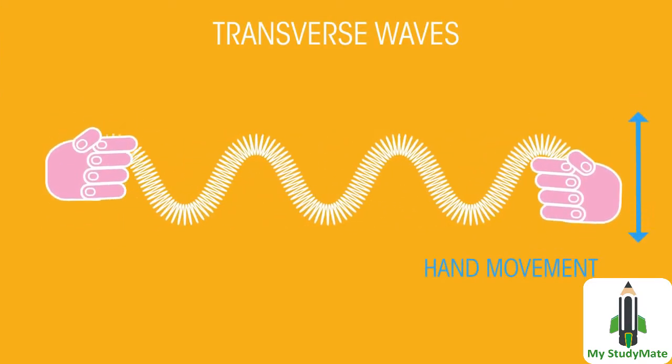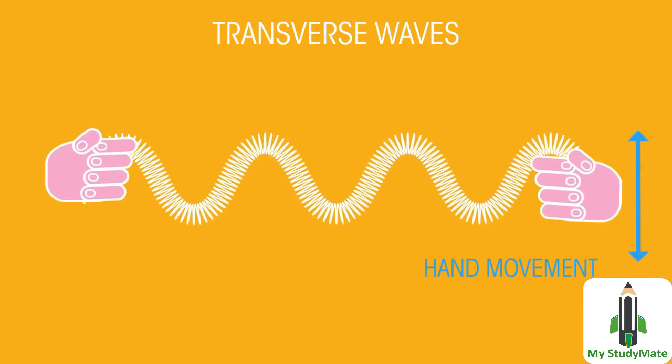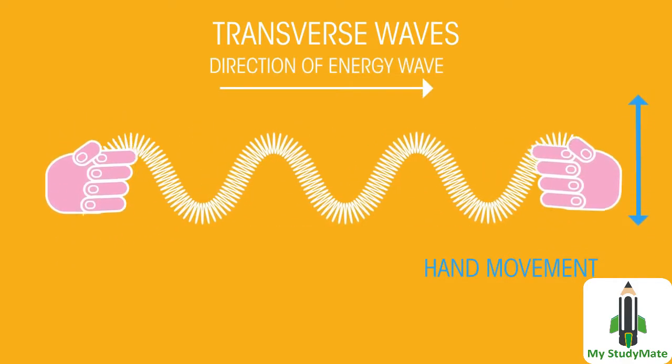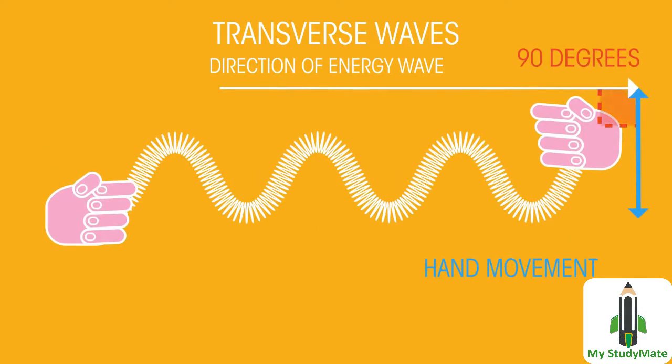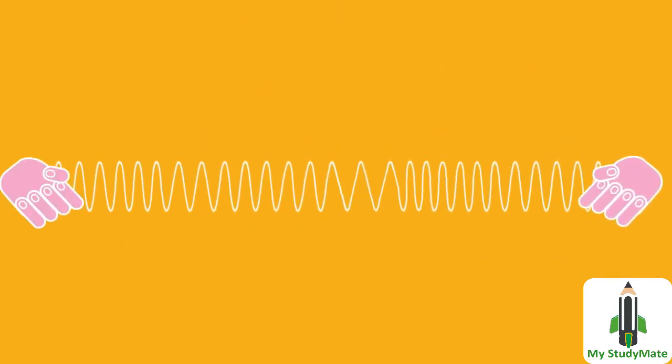Let's look at the other type of wave, transverse wave. The hand moves up and down as does the slinky, but the wave itself moves from left to right. So the particle vibrates at 90 degrees to the direction that the energy is moving.